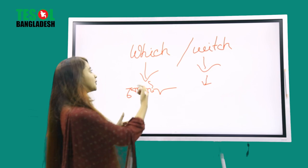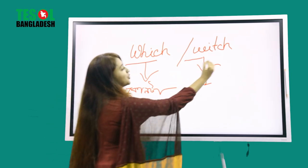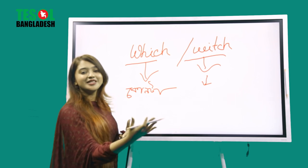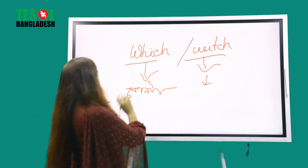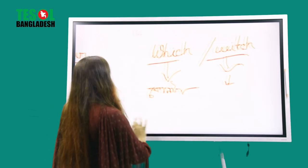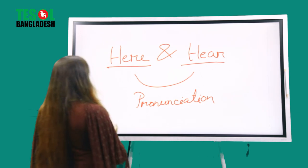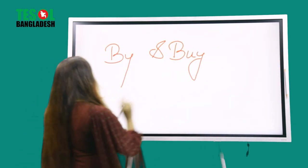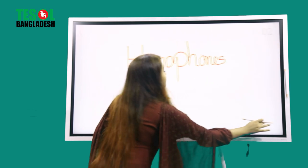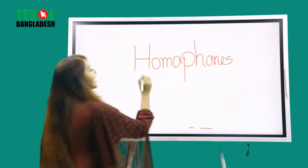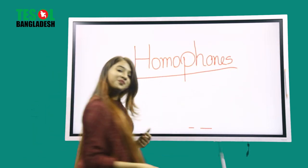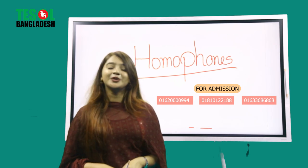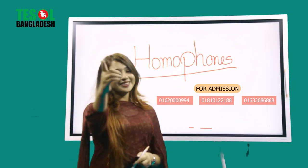Now, if you use the wrong 'witch/which' in a sentence and the listener doesn't understand the context, the meaning can change completely. So, this is a fun topic in English — different words, but pronunciation kind of the same. That is basically what homophones are. I hope you like this video. See you in the next video.